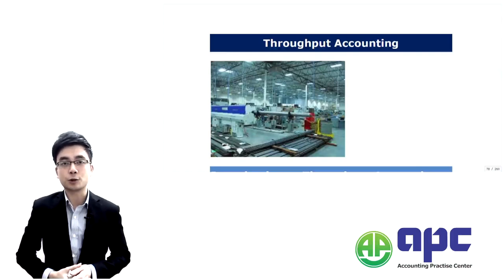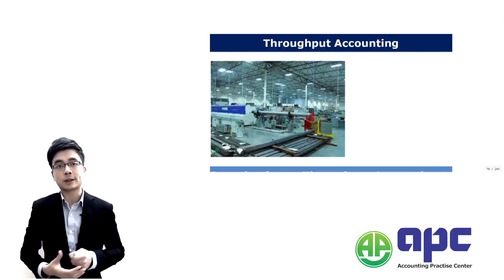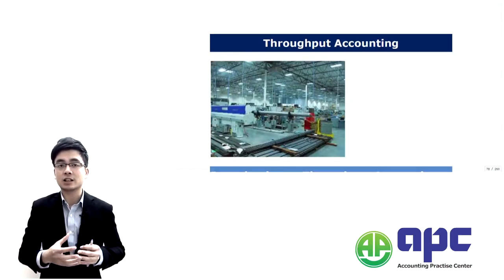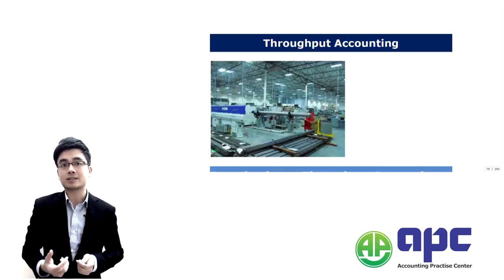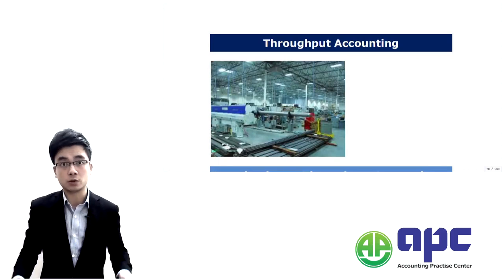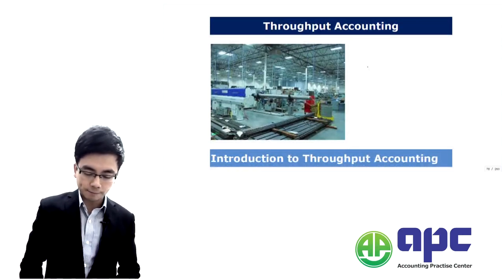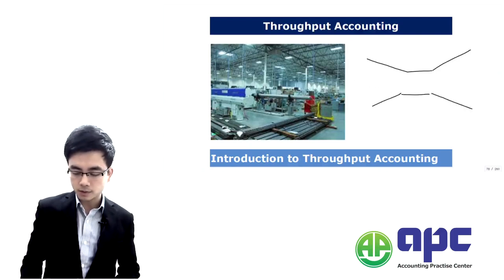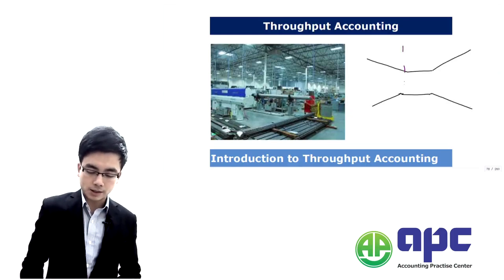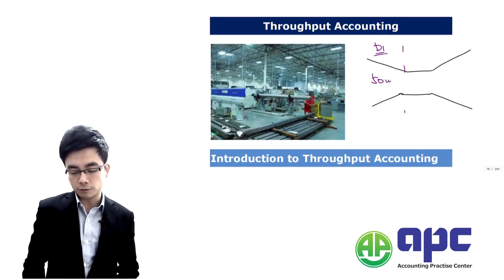Now let's look at throughput accounting. From our earlier section, we talked about when we are performing the limiting factor analysis, we consider one single limiting factor within a company. Think about it this way: you've got a factory, and the capacity may vary. The capacity for department number one is to deal with, let's say, 50 units of product.